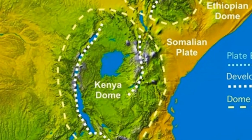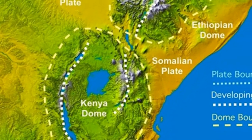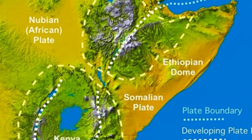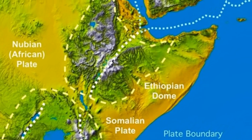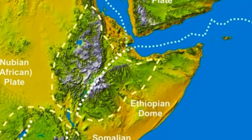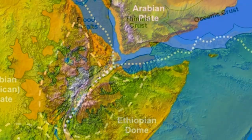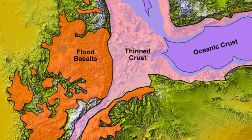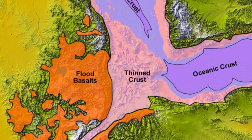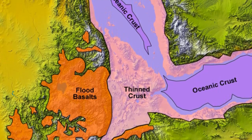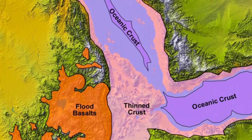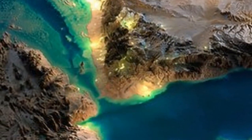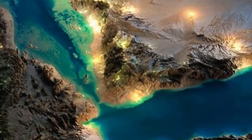Research suggests that if tensional forces are maintained, a rift valley will lengthen and deepen, eventually extending out to the margin of the continent, thereby splitting it in two. At this point the continental rift becomes a narrow linear sea with an outlet to the ocean, similar to the Red Sea. The Red Sea formed when the Arabian Peninsula rifted from Africa beginning about 30 million years ago. Steep fault scarps that rise as much as three kilometers above sea level flank the margins of this water body.